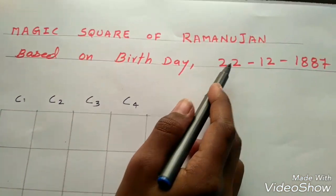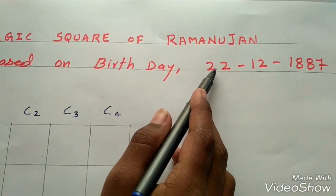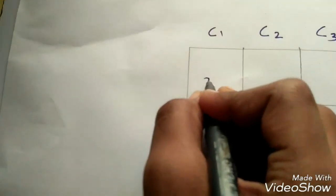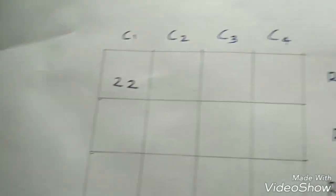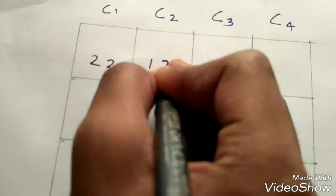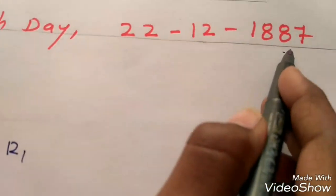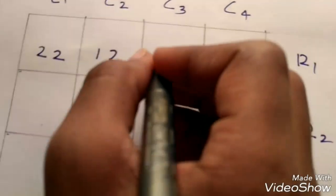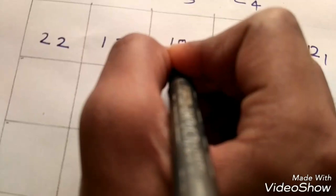The date we should write 22 here in the first box. Month we should write in the second box, and here 1887. We should write 18 here and 87 here.